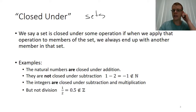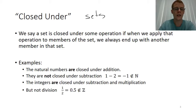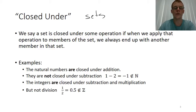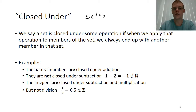However, if we were to take two natural numbers and subtract one from the other, then we can easily come up with cases where we end up with a result that is not part of the set. So if we take 1 and 2 and we subtract 2 from 1, we end up with negative 1, which is not part of the non-negative integers. In that case we say that the natural numbers are not closed under subtraction.